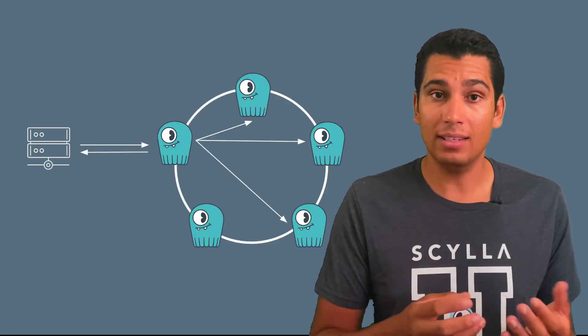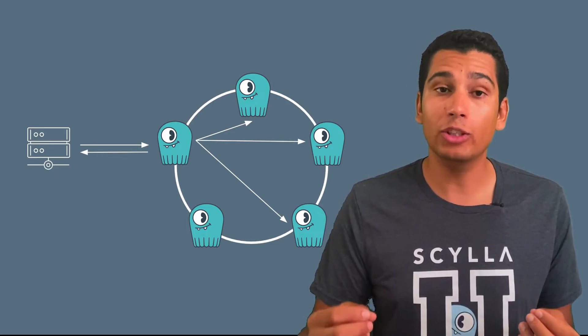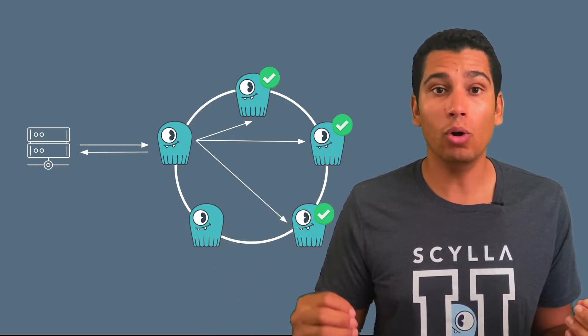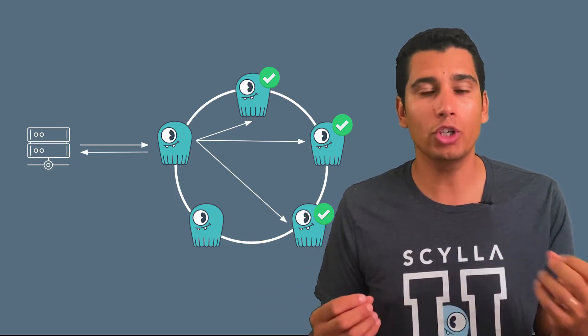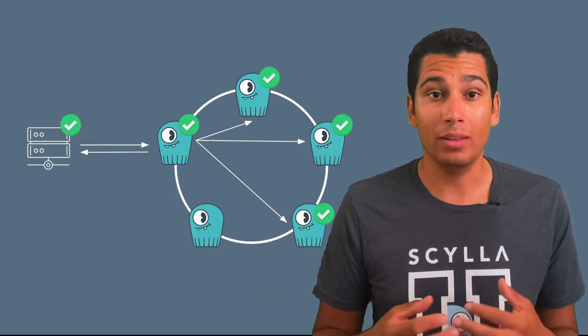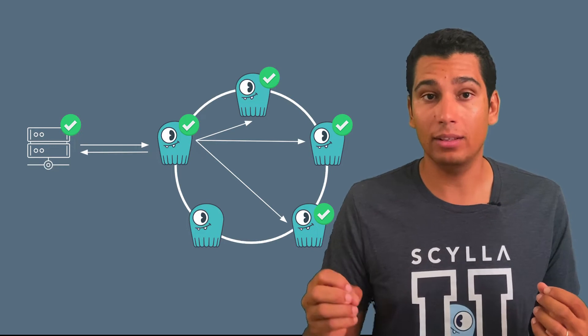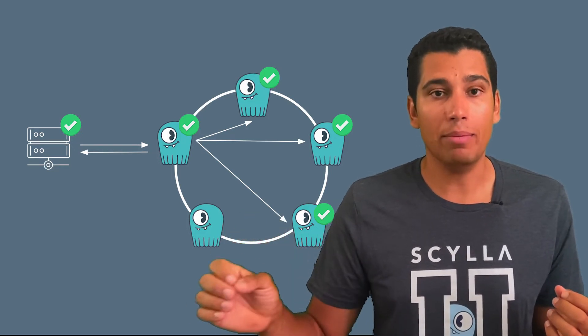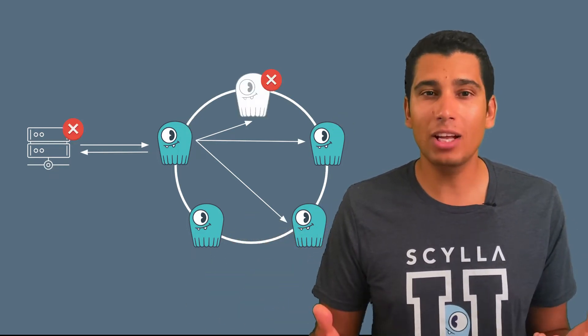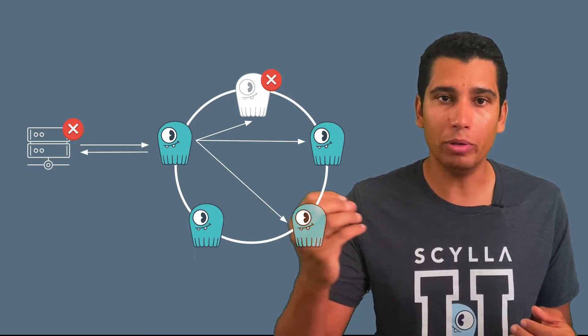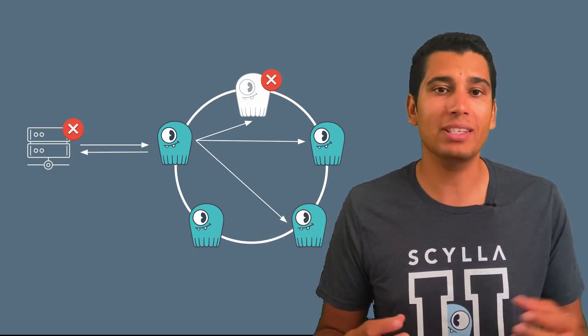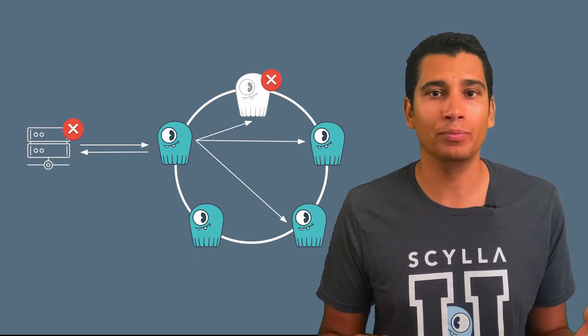Another consistency level is ALL, which means that your data needs to be replicated across all replicas and all nodes in order for your server to get a response back. This is great if you want to make sure the data is the same everywhere, but it's not really good practice for performance because you need your data replicated in all nodes before sending a response back to your server.